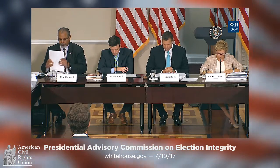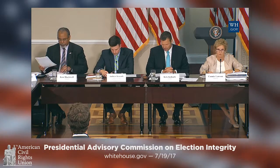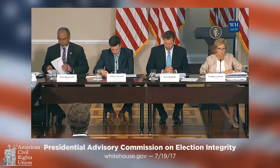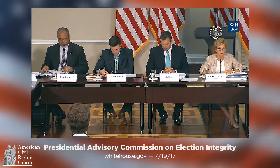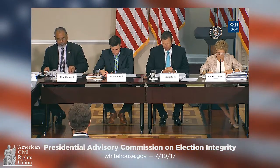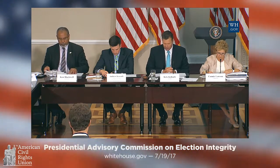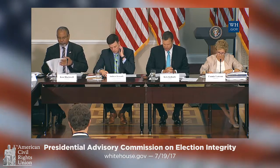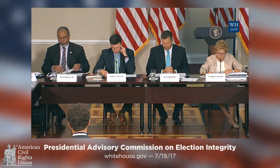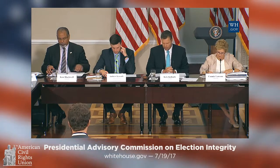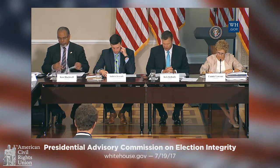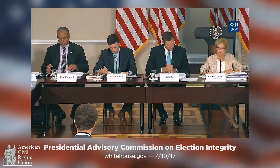B — those laws, rules, policies, activities, strategies, and practices that undermine the American people's confidence in the integrity of the voting processes used in federal elections. And C — those vulnerabilities in voting systems and practices used in federal elections that could lead to improper voter registrations and improper voting, including fraudulent voter registrations and fraudulent voting.